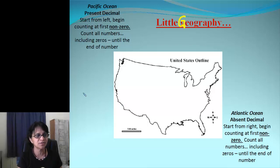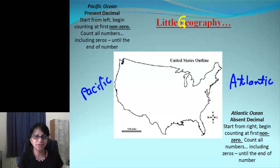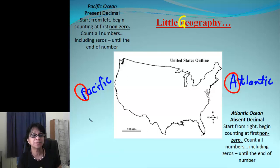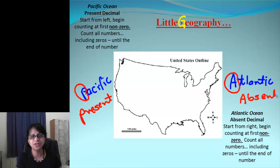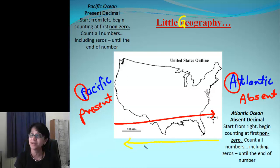On the west coast we have the pretty Pacific coast, and on the east coast we have the Atlantic. P stands for Pacific and A stands for Atlantic. If the decimal point is present, I begin my journey from Pacific — going from left to right. If the decimal point is absent, I begin from Atlantic — going from right to left — and my goal is to go from one coast to the other coast.